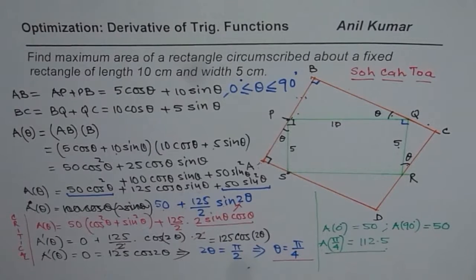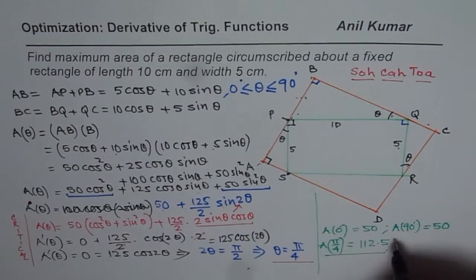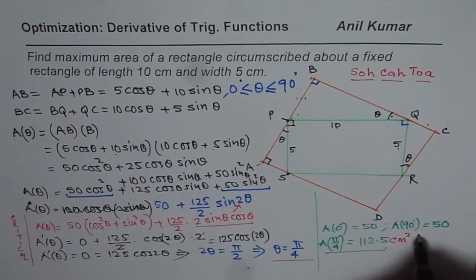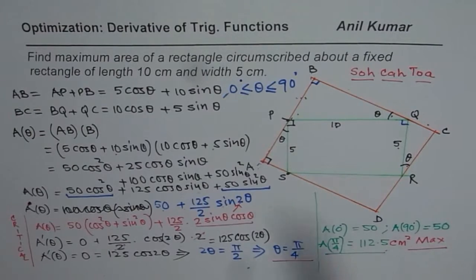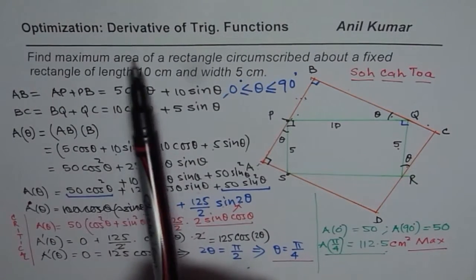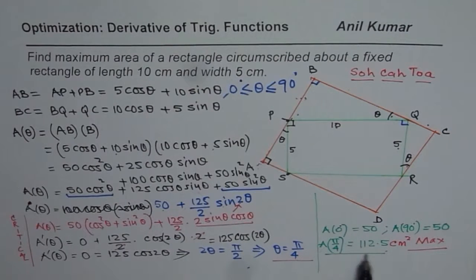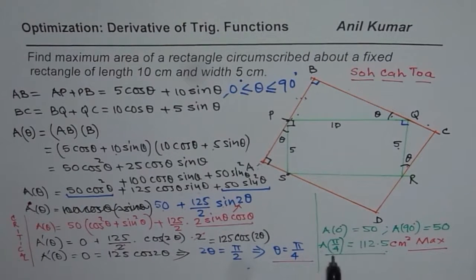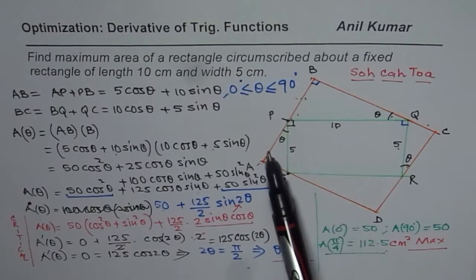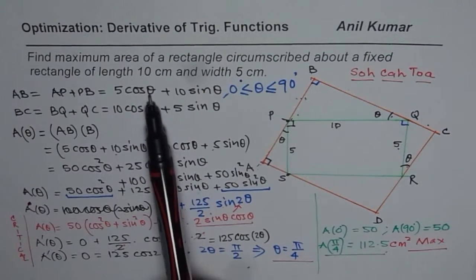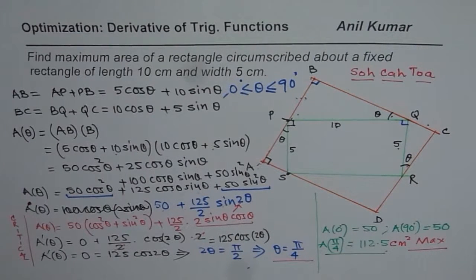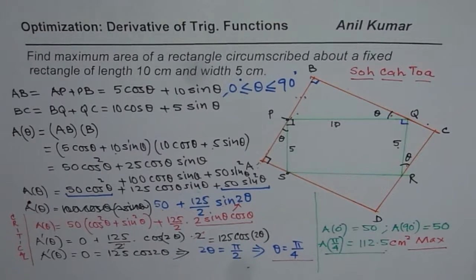The units are centimeters squared, and that is the maximum area. The question asked us to find the maximum area of a rectangle circumscribed about a fixed rectangle of length 10 centimeters and width 5 centimeters. Now we know the maximum area is 112.5 centimeters squared. If asked for the dimensions, substitute theta equals pi over 4 to find them. Trigonometry really helps to simplify the solution for such optimization questions. Thank you and all the best.